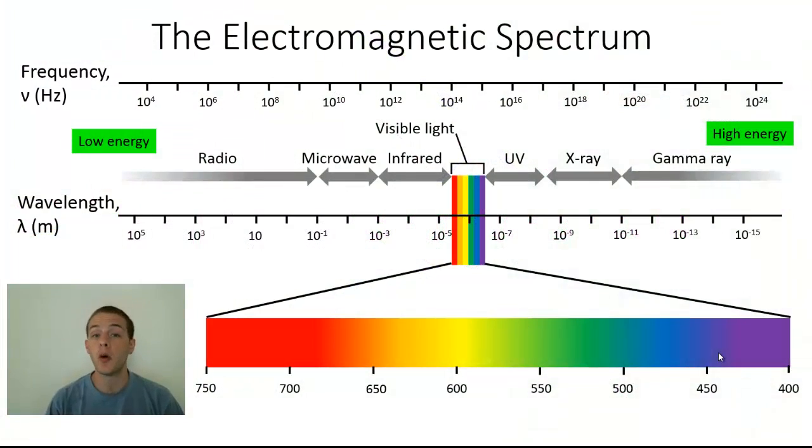Hey, what is up everybody. In this video we're going to talk about the electromagnetic spectrum, which consists of all the wavelengths and frequencies of electromagnetic radiation, also known as light. One thing that's interesting about the electromagnetic spectrum is that the only part we can see is this tiny little sliver here labeled visible light.